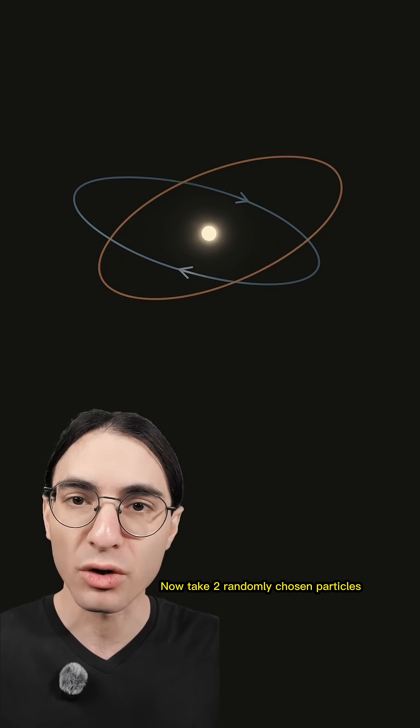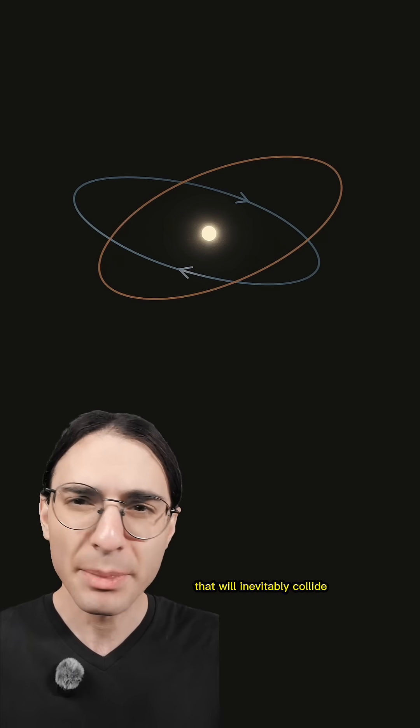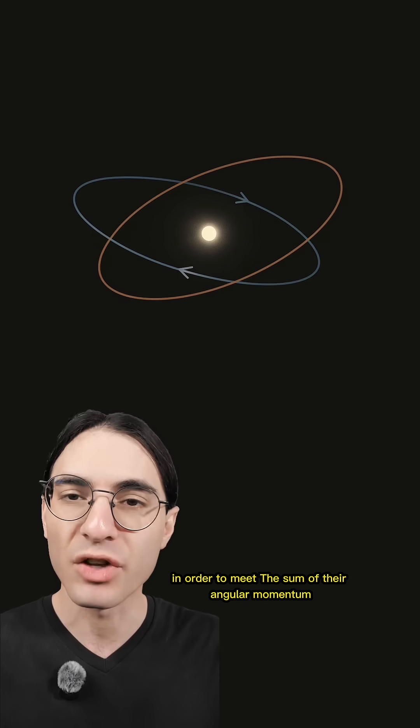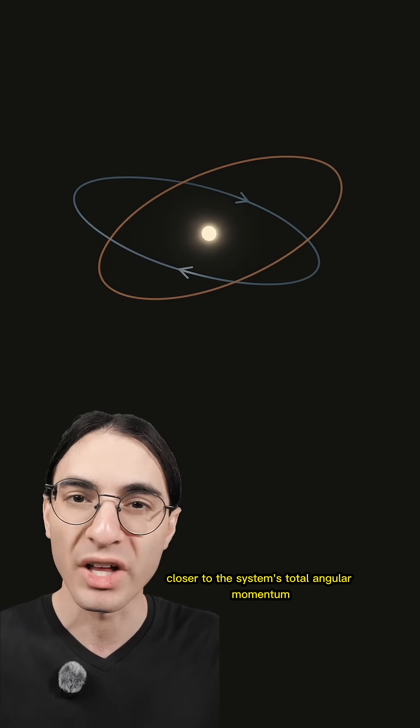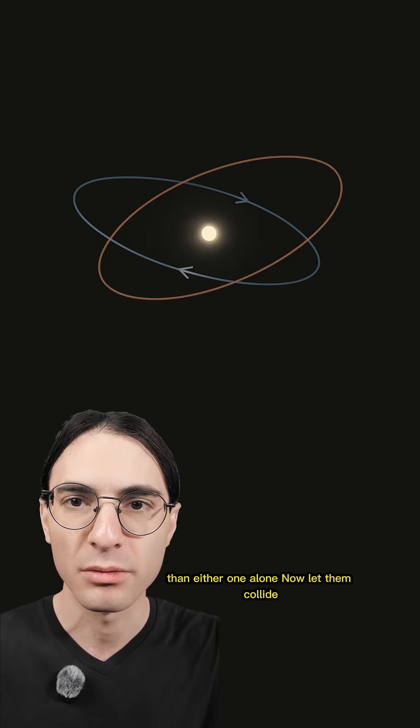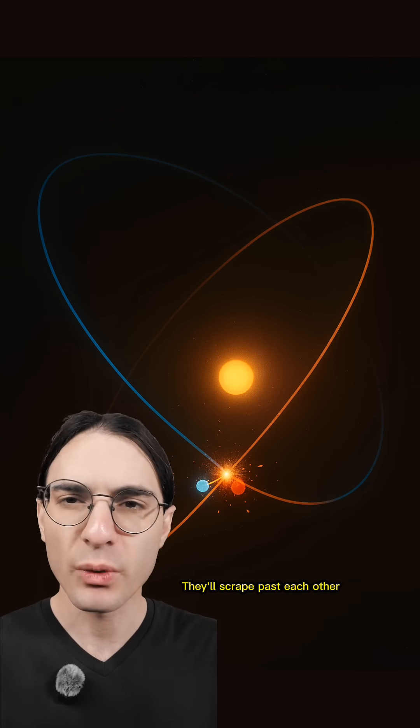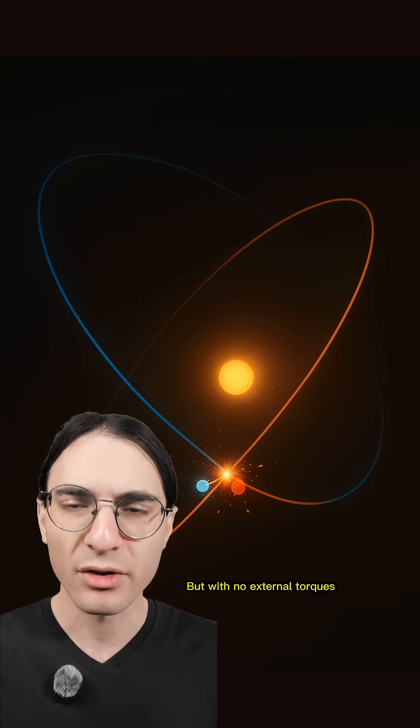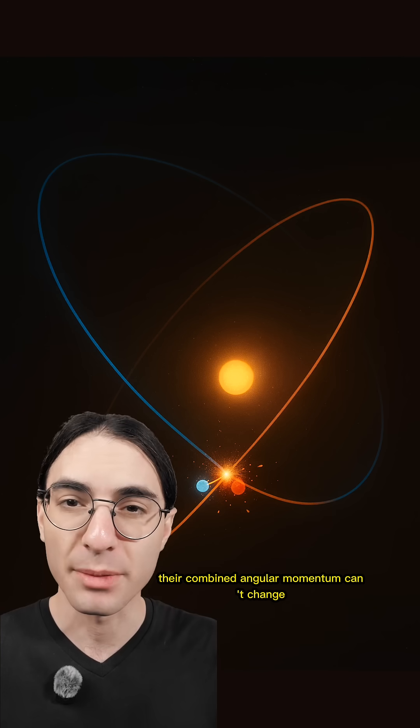Now, take two randomly chosen particles that will inevitably collide. Because they must be traveling in somewhat different directions in order to meet, the sum of their angular momentum will usually point closer to the system's total angular momentum than either one alone. Now, let them collide. They'll scrape past each other, deform, and heat up, losing energy in the process. But with no external torques, their combined angular momentum can't change.